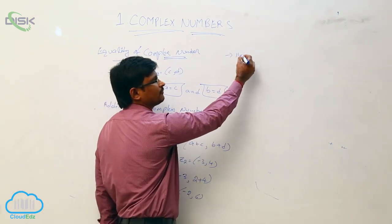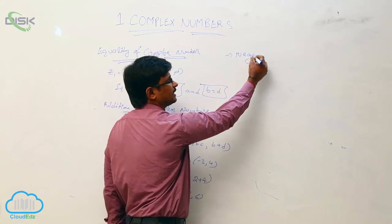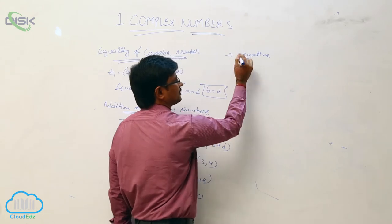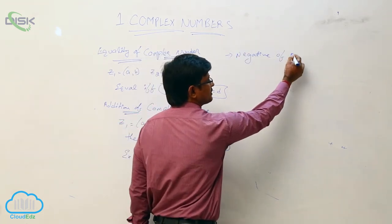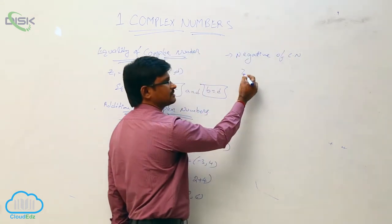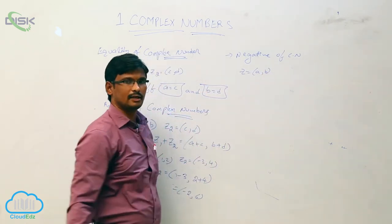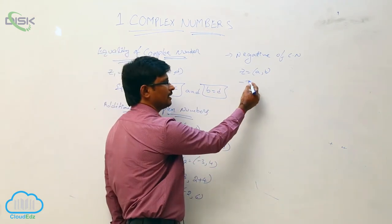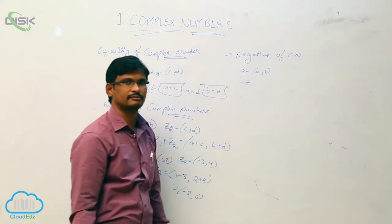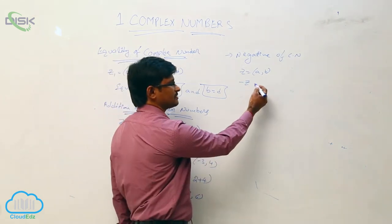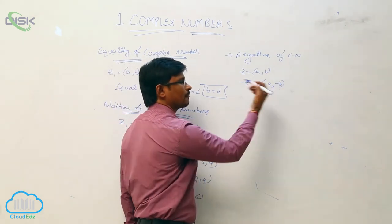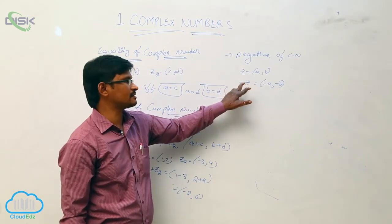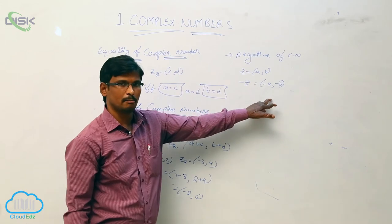Next, we will see the negative of a complex number. Let Z equal to A comma B be a complex number. Then the negative of Z is denoted by minus Z and is defined as minus A comma minus B. The negative of the complex number Z is defined as minus A comma minus B.